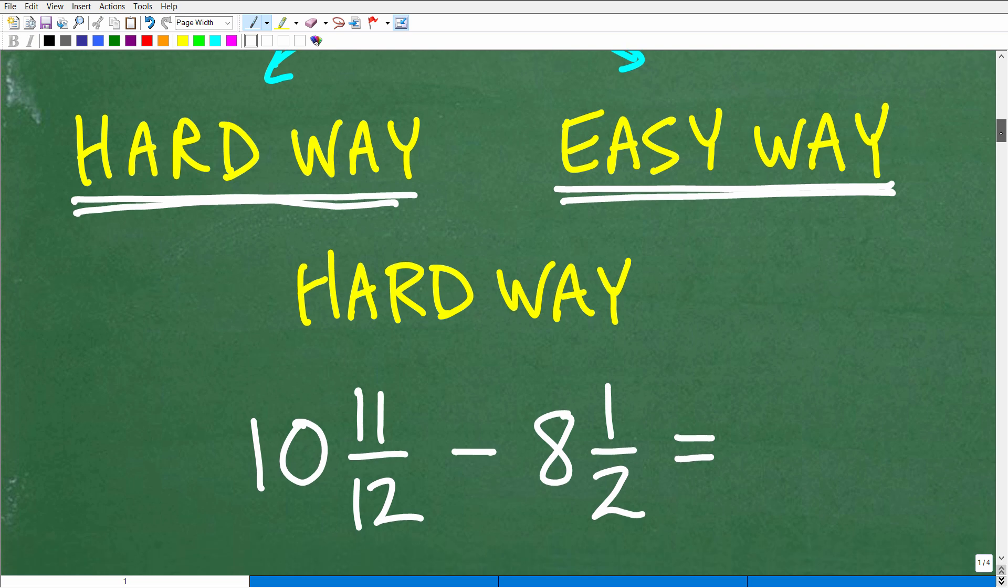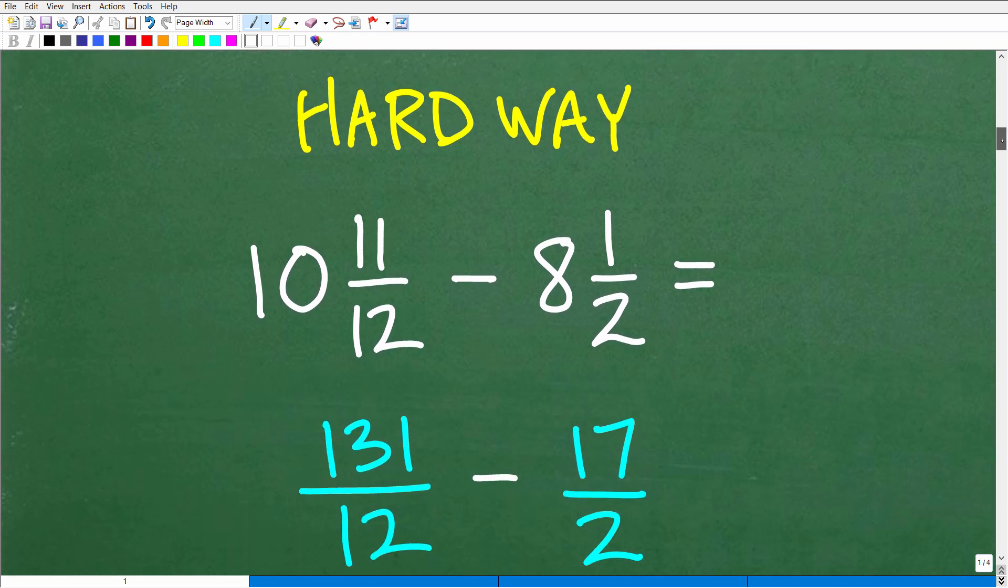Alright so let's go ahead and get into this right now. So what I would say is the hard way to approach this problem is to turn these mixed number fractions into improper fractions. In other words here we have 10 and 11 twelfths. So if I wanted to write this mixed number into an improper fraction I would go 12 times 10, that's not too bad right, so 12 times 10 that's 120 then you're going to take that 120 and add 11 to it so you're going to have 131 over 12.